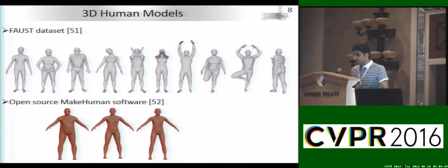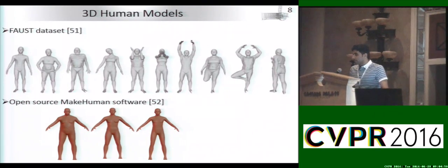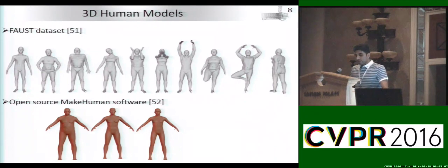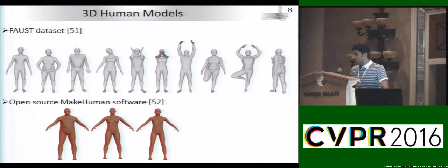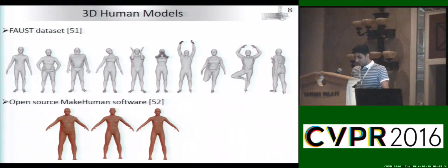Regarding 3D human models, there are different ways to generate them. For example, Bogo et al. developed the first dataset containing full 3D human body scans of 10 subjects in a few poses. Another way is to use the open source MakeHuman software, which can synthesize realistic 3D human models in predefined poses and also provide joint skeleton data, which can later be used for generating human models in different poses. We use this approach in this work.